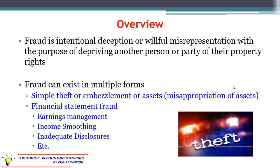Then we have inadequate disclosures, which could be simply lying about something on the financial statements or not clearly disclosing that something exists. Maybe you have a liability or a risk of a contingent liability, and you're supposed to be telling your investors that could exist — if you don't, that would be an inadequate disclosure. You might be misleading about how something looks on the balance sheet, making an asset appear worth more than it really is without disclosing that.